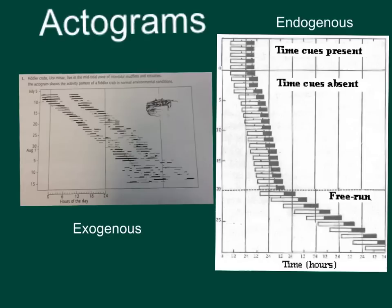There are two different types of actograms: exogenous actograms and endogenous actograms. Exogenous actograms are dependent on the environment, while endogenous actograms are independent of environmental factors.